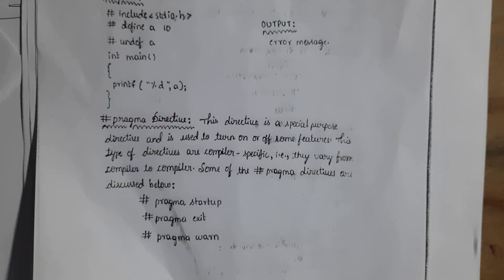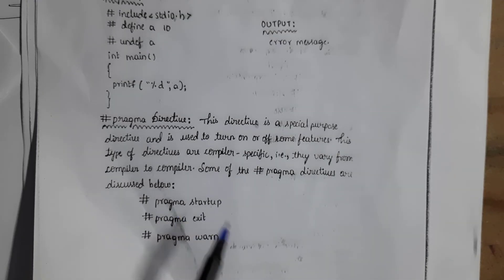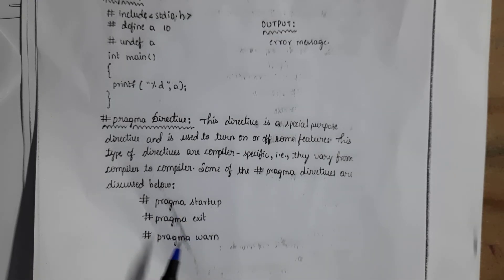The last category is other directives, which includes the #undef directive (already explained) and the #pragma directive. The #pragma directive is a special directive used to turn on or turn off special compiler features. Examples include #pragma startup, #pragma exit, and #pragma warn, where startup, exit, and warn are special features.